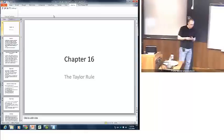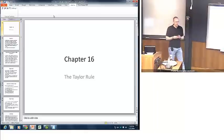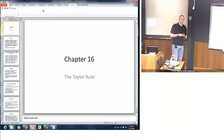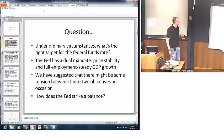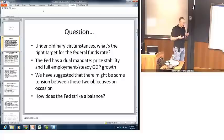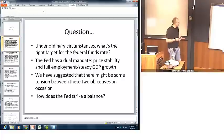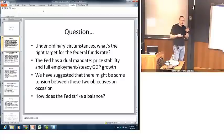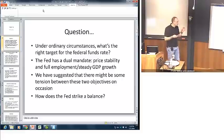Hello everyone again. Now we're going to be talking about chapter 16 in Mishkin's Money and Banking text, and we're going to be looking at what's called the Taylor Rule. Here's the interesting question we want to think about: under ordinary normal circumstances, what's the right target for the federal funds rate? In other words, should it be relatively high or low based on what type of economic circumstances? The Fed has what's called a dual mandate. By law, it's required to maintain price stability and full employment along with steady GDP growth.